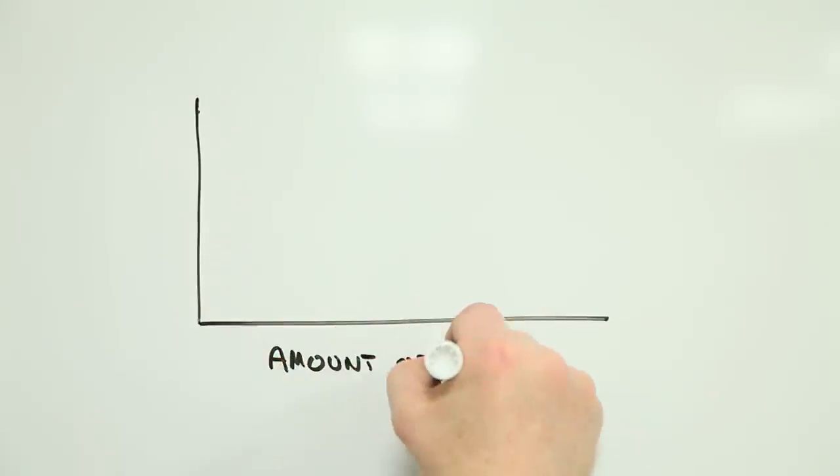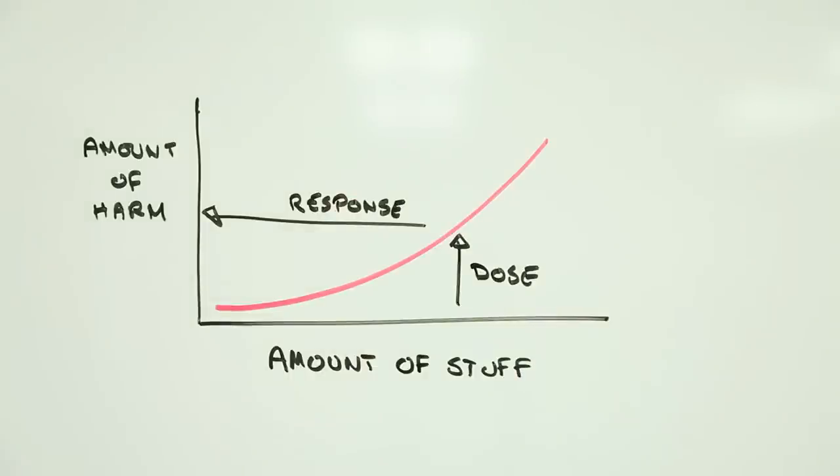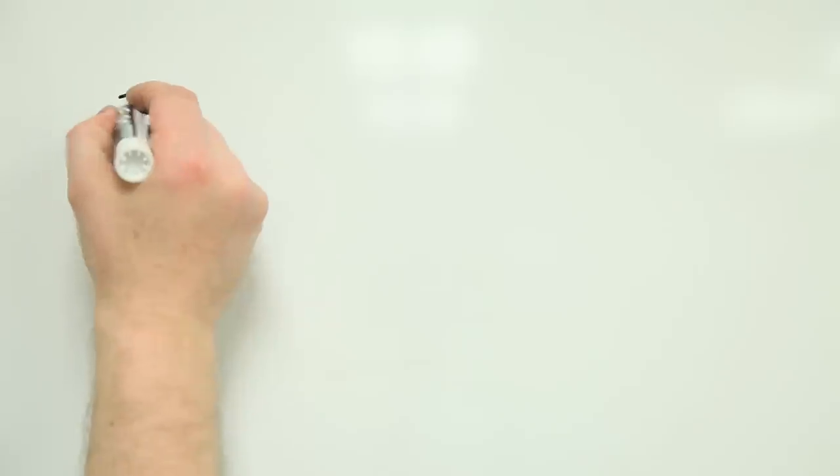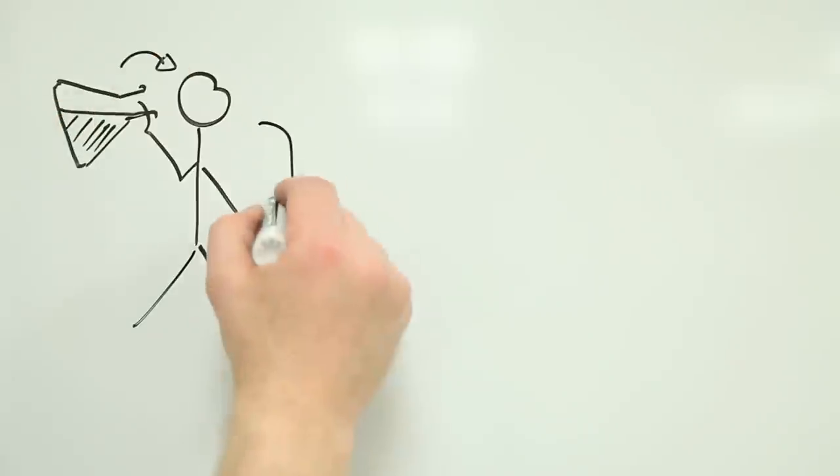Dose response is simply the relationship between how much of something our body is exposed to and the way it responds to that something. When it comes to chemicals, the dose is the amount of stuff that gets to a particular part of the body where it can do harm. And the response is the harm a given amount of stuff does.